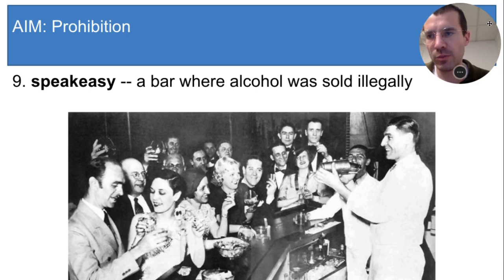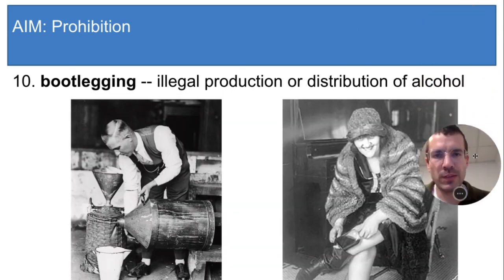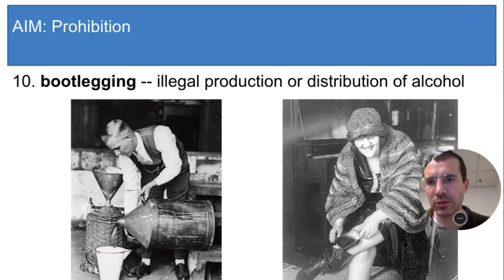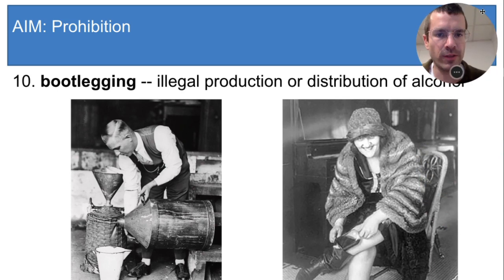Drinking was more popular now because it felt risky or subversive, even though the government didn't do a lot to enforce the law. Speakeasies were supplied by bootleggers. Bootlegging means making or selling alcohol illegally. It's called bootlegging because some of the people who did it hid their alcohol in a flask in their boot, like you can see this woman doing.